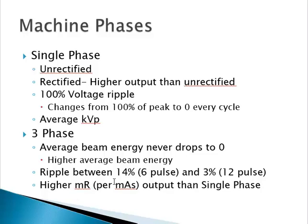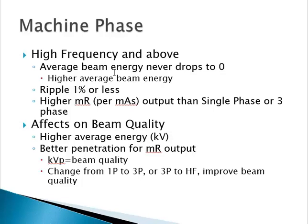High frequency pushes a bit further — everything said about three phase applies to high frequency, but voltage ripple is down to 1% or less. This gives an even higher MR per MAS output than even three-phase twelve-pulse. The effect on beam energy is higher average energy — peak energy remains the same, but average increases. This gives better penetration per MR output and a clear increase in beam quality. Changing from single phase to three phase, then from three phase to high frequency, each step improves beam quality.